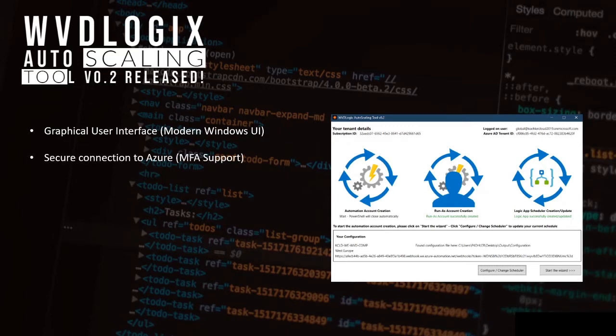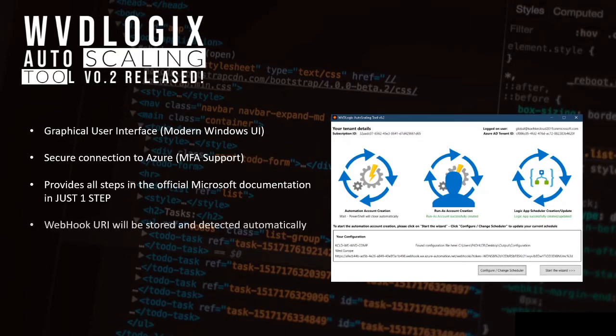You have global admin accounts with MFA activated? Very good. This tool supports secure connections to Azure while benefiting from multi-factor authentication and conditional access integrations. It provides all the steps in the official Microsoft documentation in just one single tool. And the webhook URI will be stored and detected automatically, so there's no need to copy and paste it into a PowerShell window anymore.